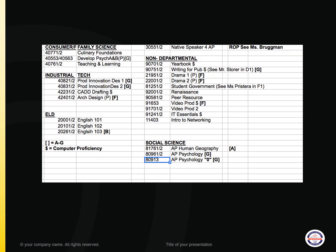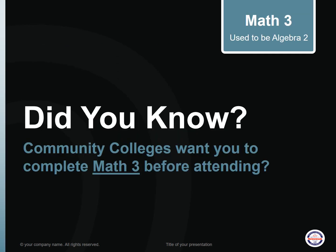This slide references the bottom half of the elective sheet we just reviewed. Regardless of what math level you are in next year, we want to remind you that community college is wanting you to complete Math 3 before attending.